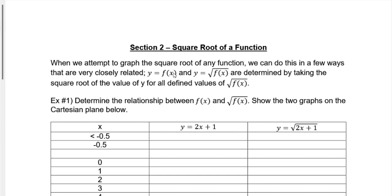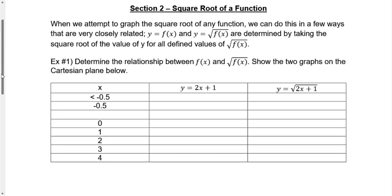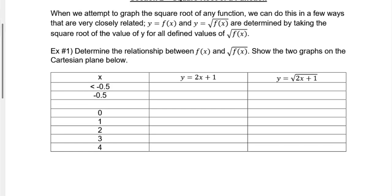Since we know that y equals f of x, and y equals the square root of f of x are determined by taking the square root of the y value for all defined values. If we create a table of values — I'm going to do this table backwards — so y equals 2x plus 1. If our x value is 4, 2 times 4 is 8 plus 1 is 9. Then 2 times 3 is 6 plus 1 is 7. Then 5, 3, 1.